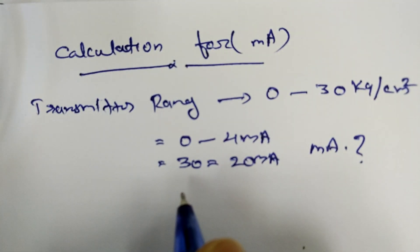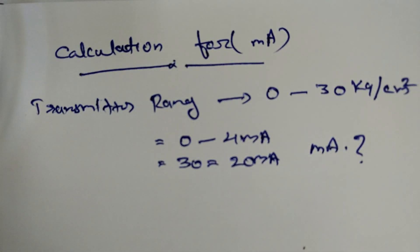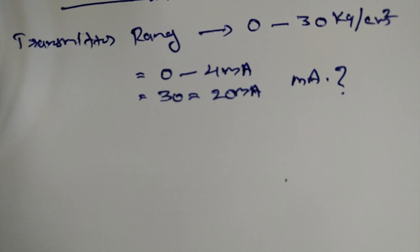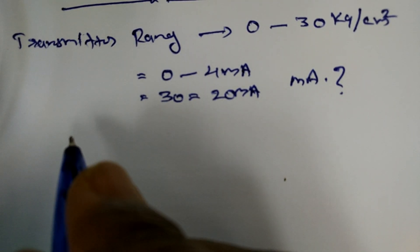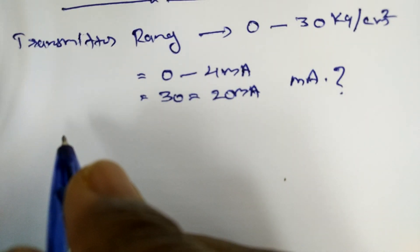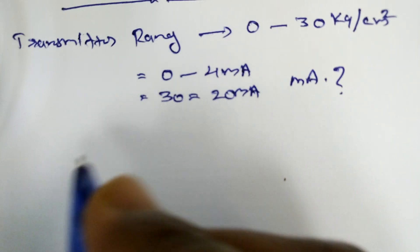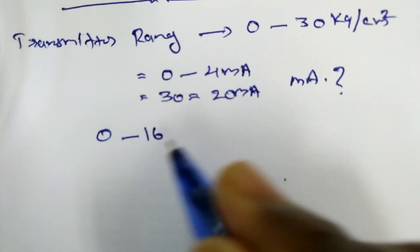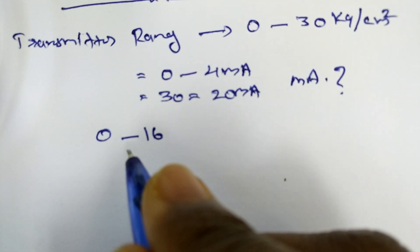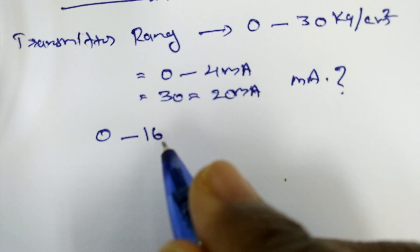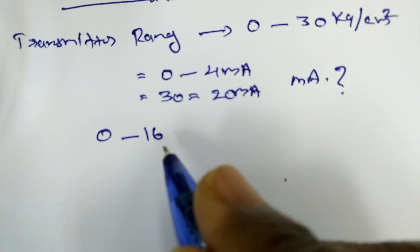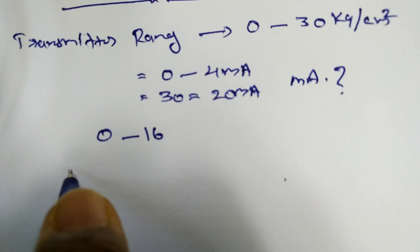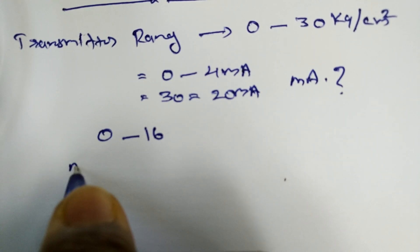This 4 to 20 is a standard. In 4 to 20, we call the standard 0 to 16. We start with 0 to 16 mA — that is what we call the standard span, which is 16 mA.